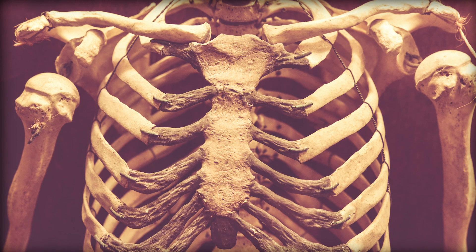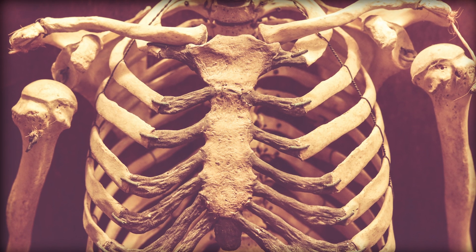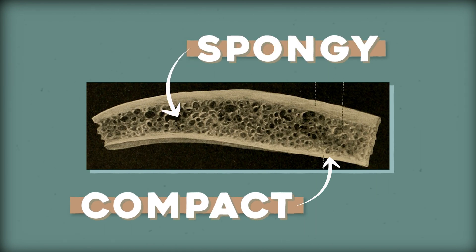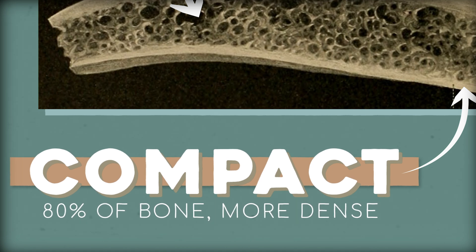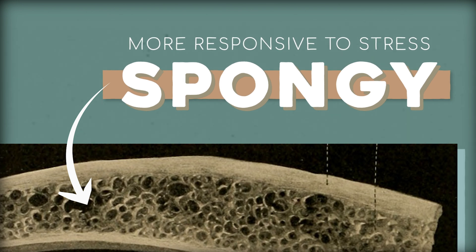Bone itself is a connective tissue made mostly of collagen peppered in with some calcium phosphate. It can be arranged as compact or spongy bone, which are exactly what they sound like. Compact is 80% of the bone in your body and makes a good outer shell, while spongy bone takes up more space and responds much more quickly to stress than compact bone. Under a microscope, compact bone forms a beautiful and intricate pattern — trypophobes, you may want to look away.